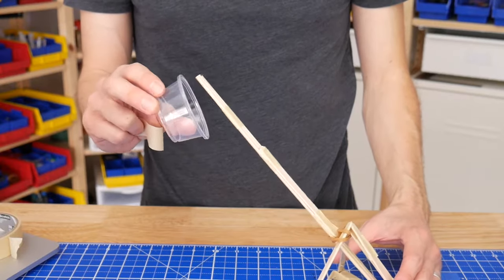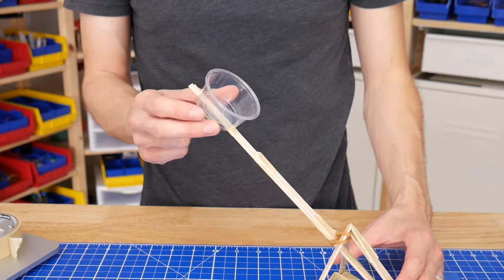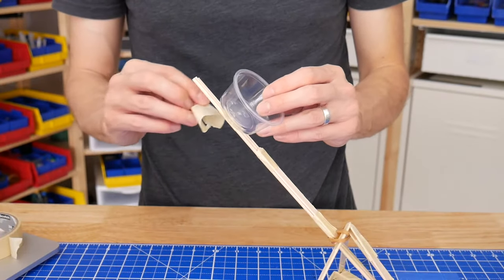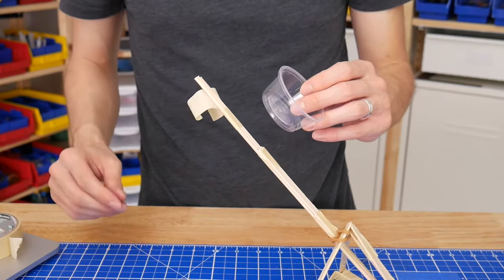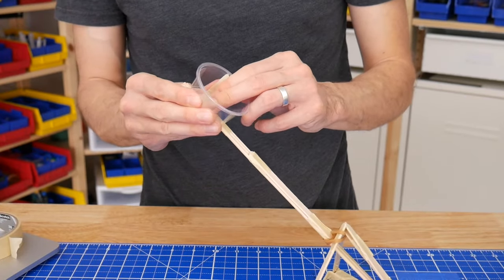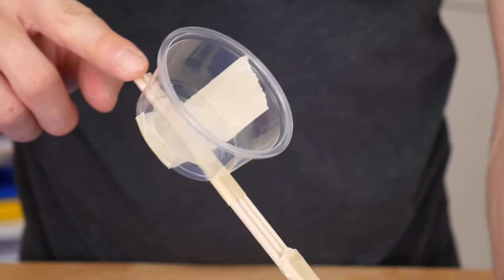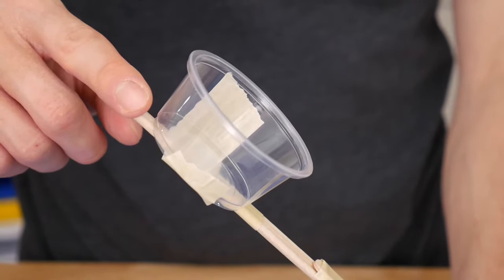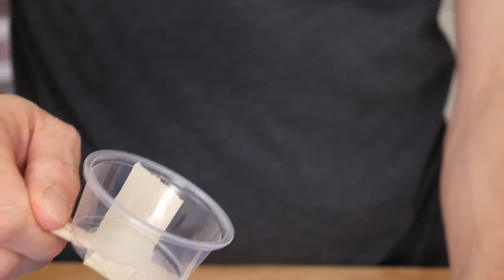And finally, the last step is to attach the cup onto the end of the arm. The easiest way to do this is to put a piece of tape onto the end of the arm like this, then tightly wrap the tape around the sides of the cup. Make sure to leave a little bit of the catapult arm exposed behind the cup so you have space to grab it and pull the arm down.